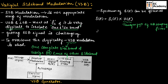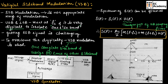In the frequency domain, we can write the expression as S of F equals (AC / 2) times [M(F − FC) + M(F + FC)] times H of F. This figure shows the spectral representation of the message signal as well as the VSB signal. Figure A is the spectrum of the message signal, and figure B is the spectrum of the DSBSC signal S1 of T. Figure C represents the spectrum of the VSB modulated signal S of T.